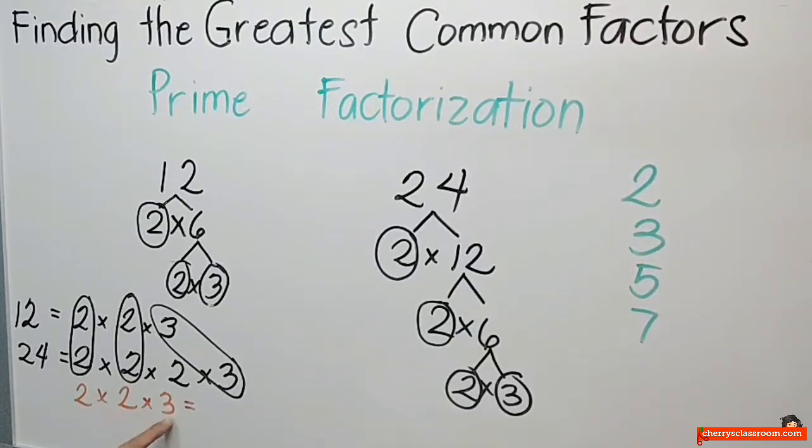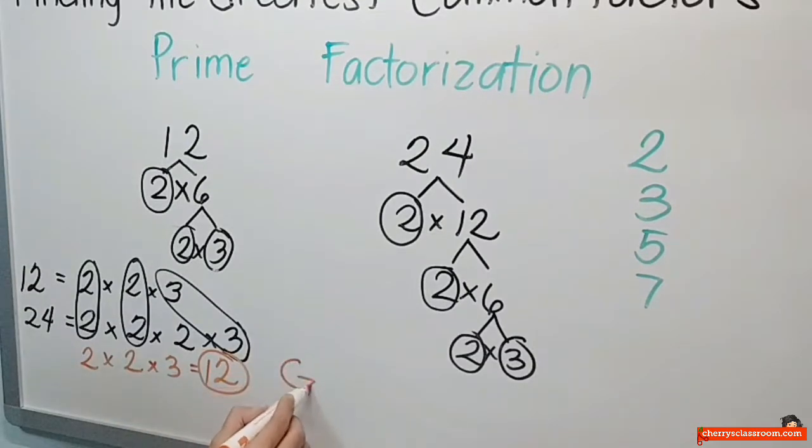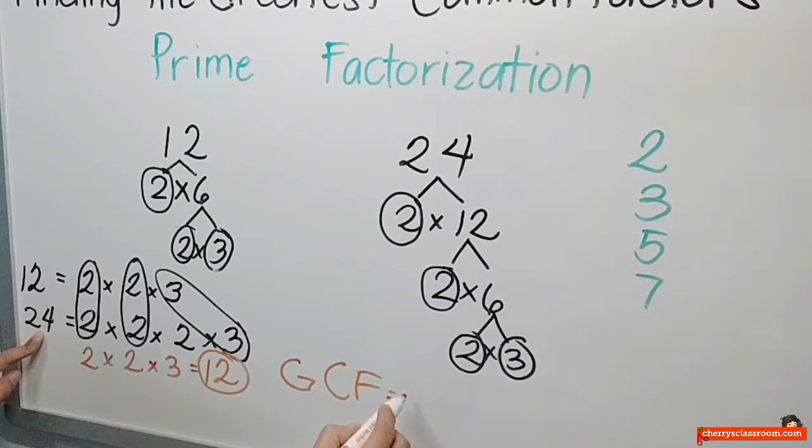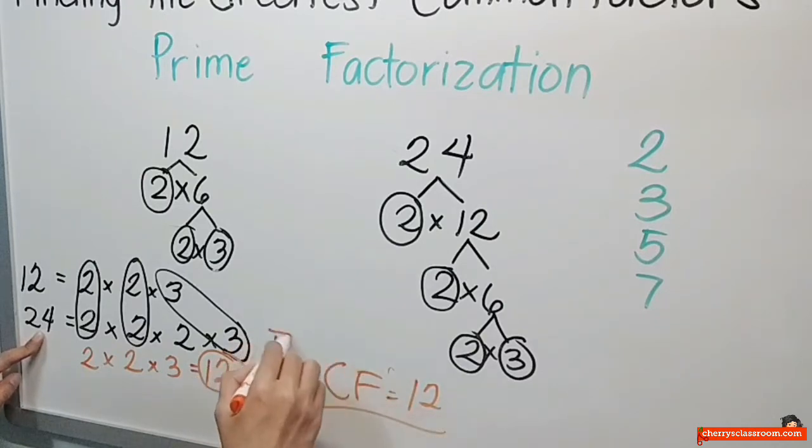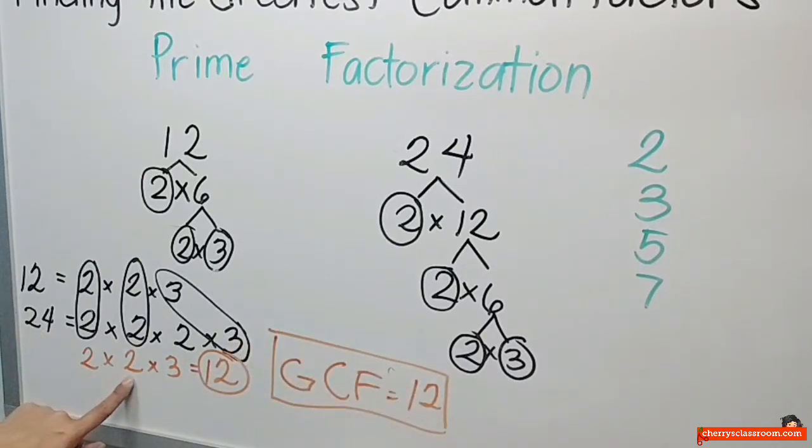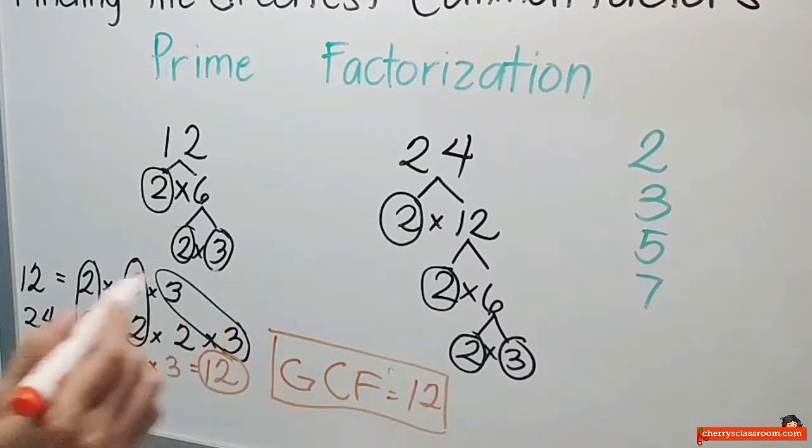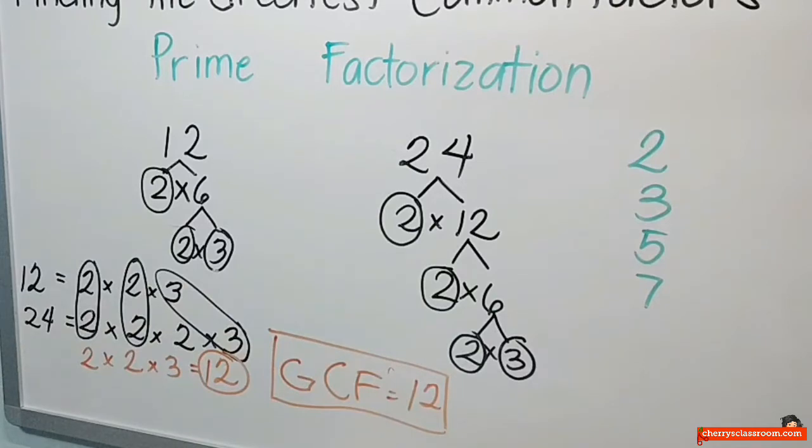Equals. 2 times 2 times 3. Ang sabot ay 12. Ang GCF ng 12 at 24 ay 12. Ito ang iyong sagot. Kasi 2 times 2 is 4. Times 3. 12. GCF. So, ito ang tinatawag na prime factorization.